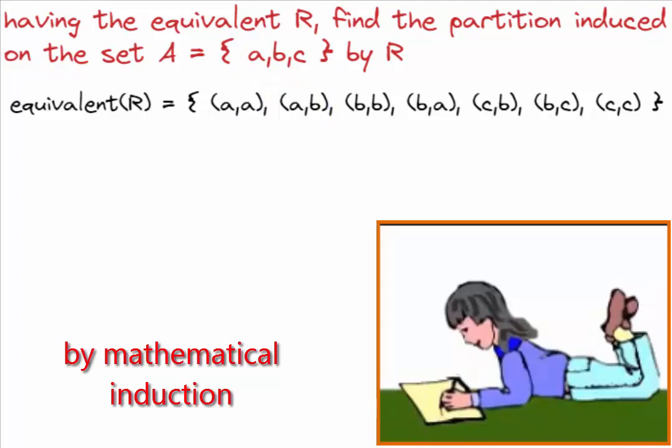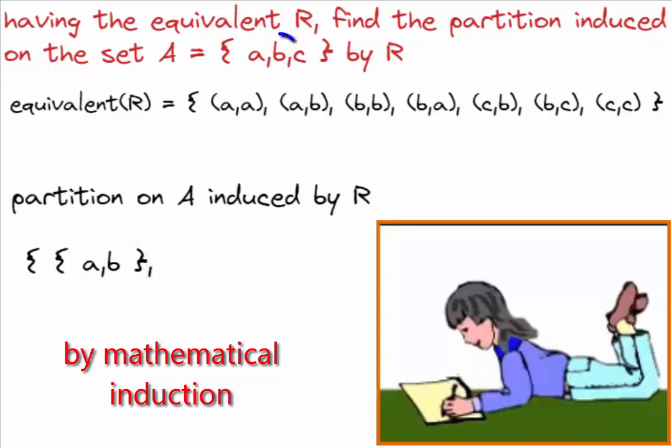We write the relations of A. Check B. B is already on the first subset. Only left the B-C relation. We write the B relations. And finally, C is related to itself, but is already on our partition.